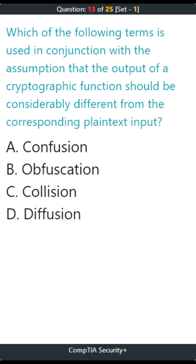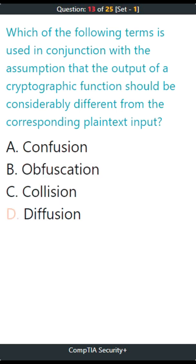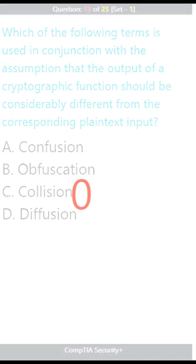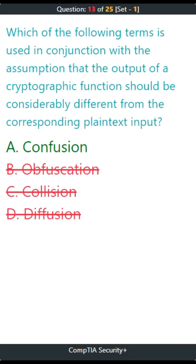Question 13. Which of the following terms is used in conjunction with the assumption that the output of a cryptographic function should be considerably different from the corresponding plain text input? A. Confusion, B. Obfuscation, C. Collision, D. Diffusion. The correct answer is A. Confusion.